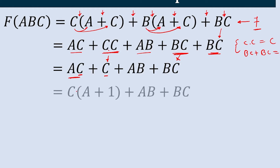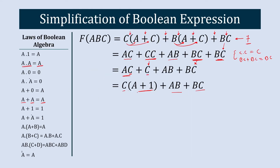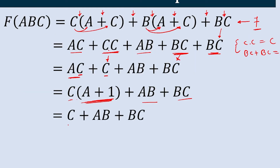Now we can take C common from this term, giving us C·(A plus 1) plus AB plus BC. Here, the Boolean algebra law A plus 1 equals 1 applies, so we replace A plus 1 with 1, and we get C plus AB plus BC.